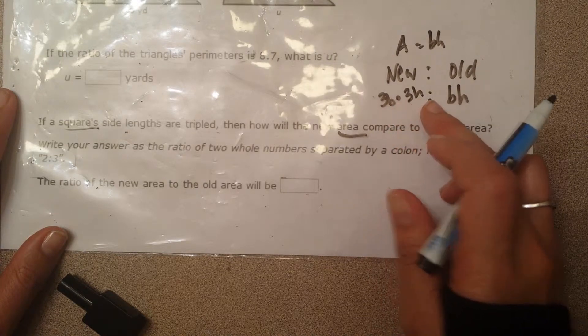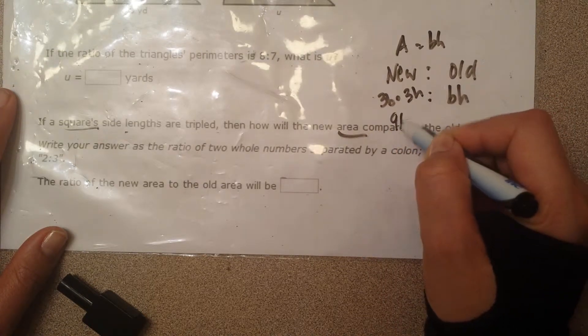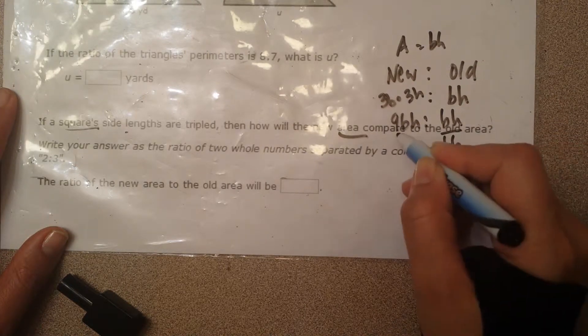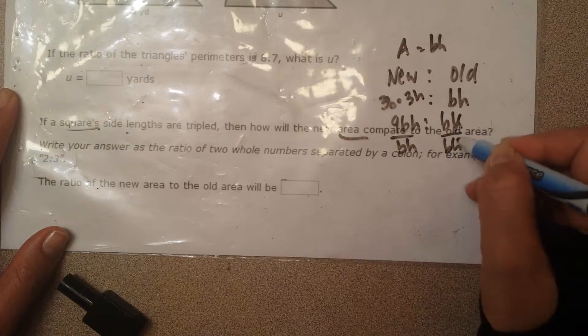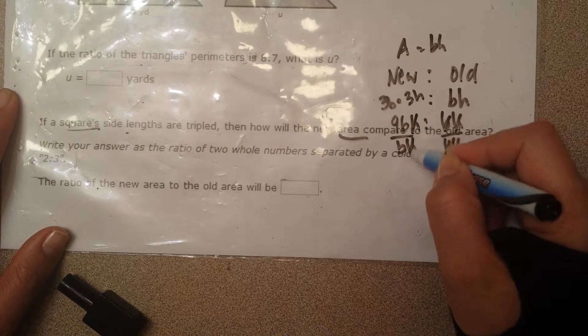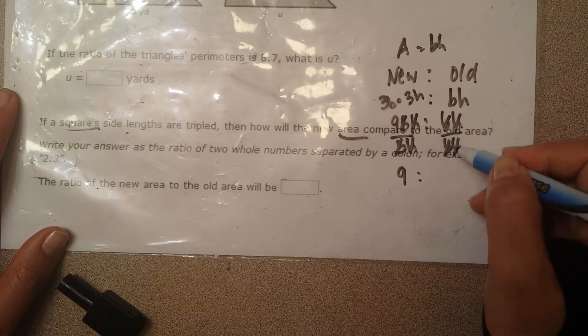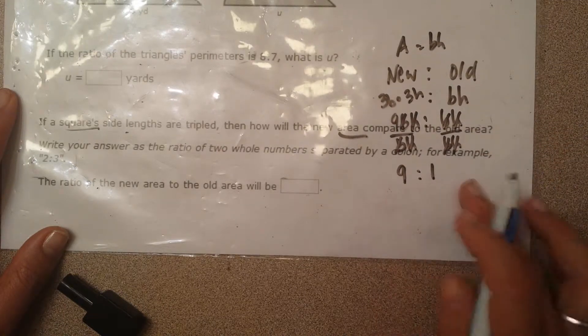So 3b times 3h is going to give me 3 times 3 is 9bh. And on this side I'll have bh. Go ahead and simplify it. If I just divide by bh as long as I do it to both sides, this is going to cancel that, that's going to cancel that. All I have is 9 and anything divided by itself is just 1. So it's 9 to 1.